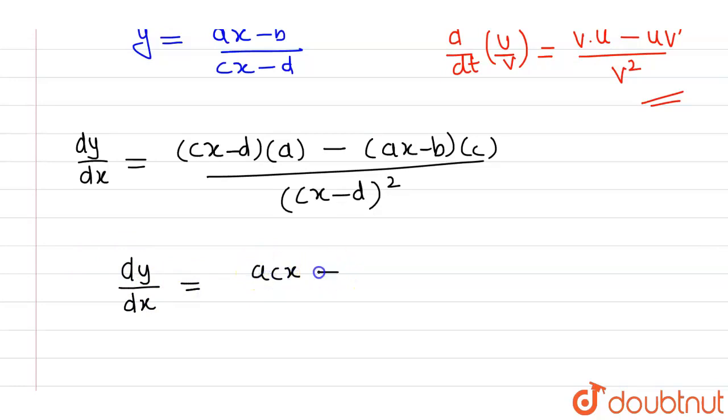acx minus ad minus acx plus bc, divided by cx minus d whole square.